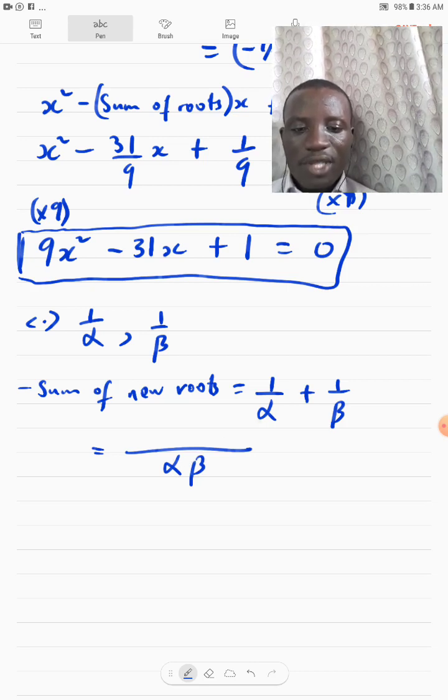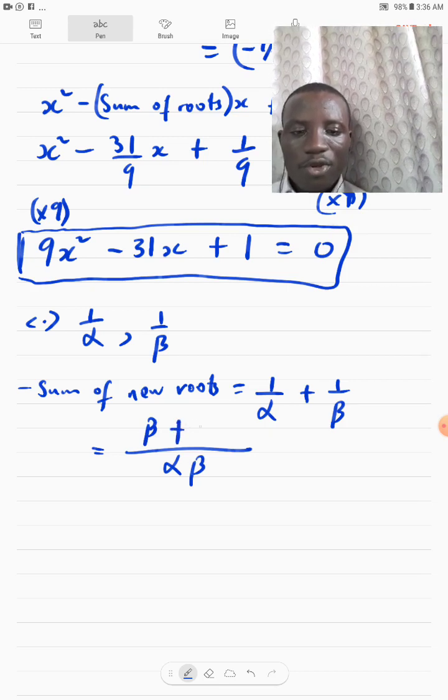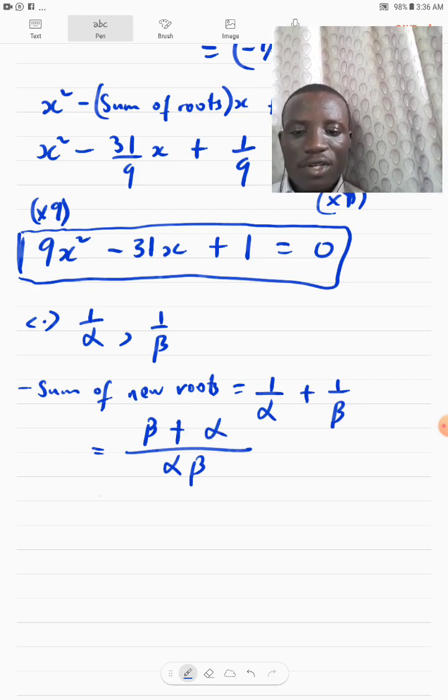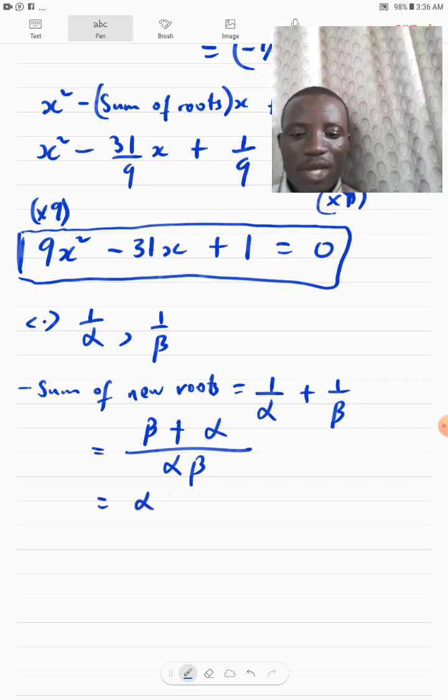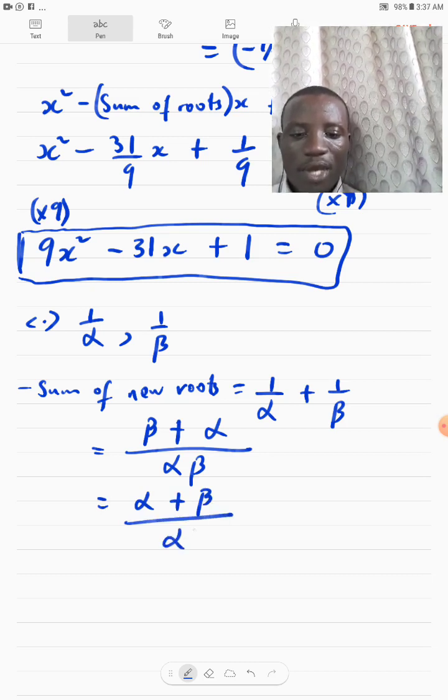LCM will give us alpha beta. Alpha in alpha beta will give me beta. Beta times 1 give me beta plus beta in alpha beta, that will be alpha times 1. That will be alpha.